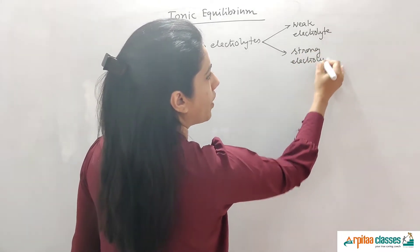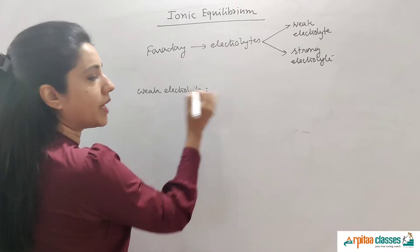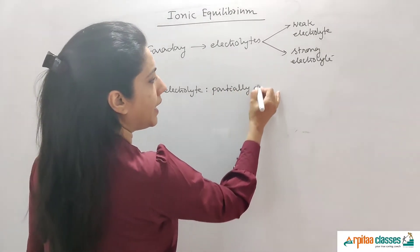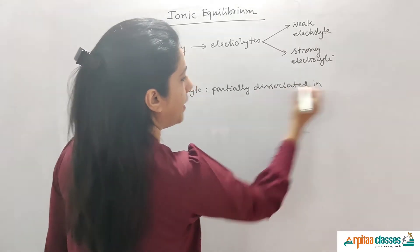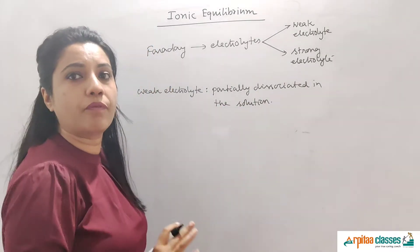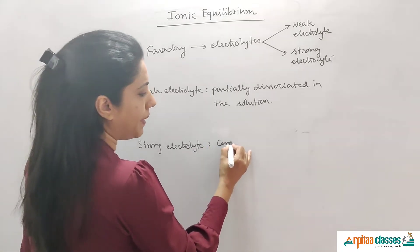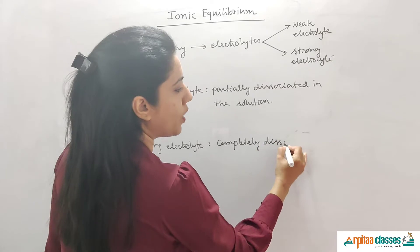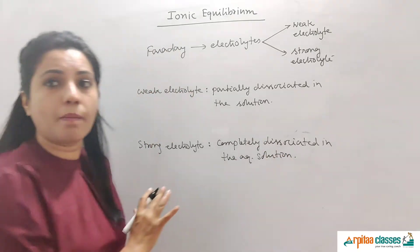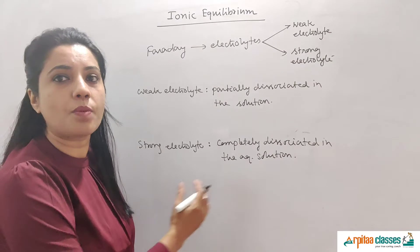Weak electrolytes are those which only partially dissociate in solution and give you fewer ions — they are not completely dissociated; only very small amounts of ions are obtained. Strong electrolytes are almost 100% dissociated — completely dissociated in aqueous solution. We will not talk about strong electrolytes here because strong electrolytes will 100% dissociate and we will not get equilibrium in their case.